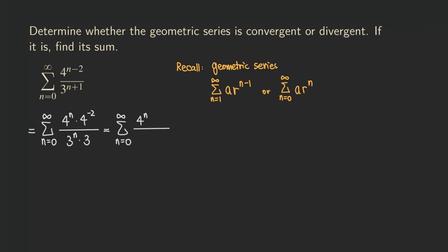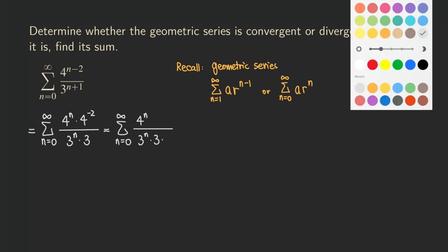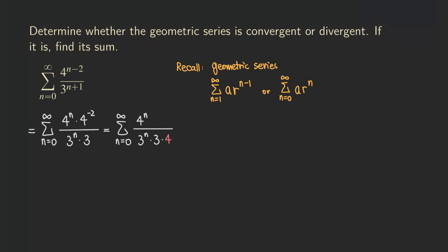So you know that if we move that four to the negative two to the bottom, then we are going to be getting three to the n times three times... Now we move it to the bottom. So we are getting four to the second. So as you can see here, the exponent, it's from negative two to now it's positive two, because we move it to the bottom, we're taking its reciprocal. So we get that.